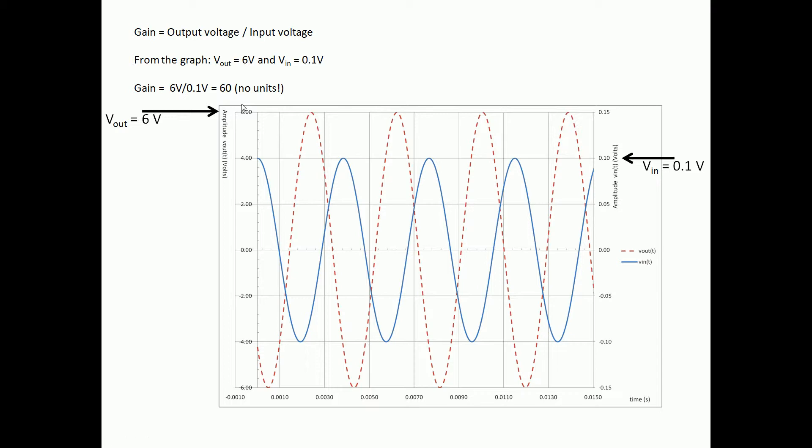Because we're dividing volts by volts we actually cancel our units, so we have a gain of 60 and there are no units associated with this gain. So that's the first part of the question done and we're thinking about it, it's sensible. We've got a much bigger output than we do input.